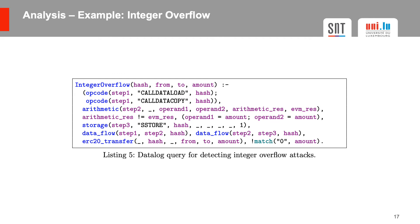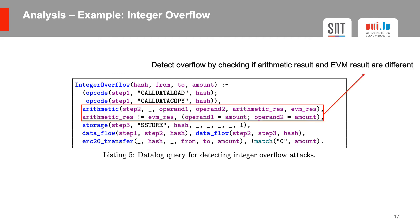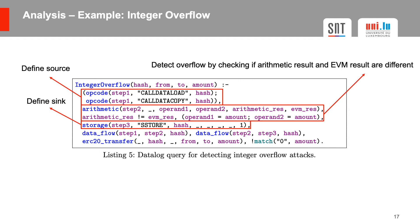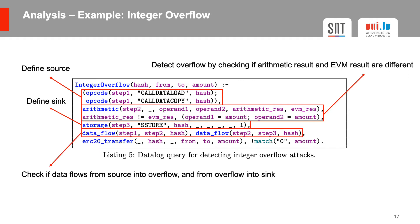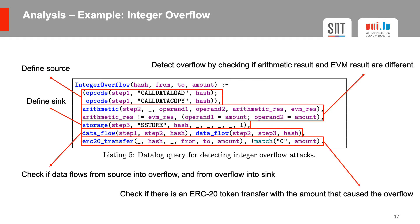In this example you can see a datalog query to detect integer overflows. First we detect if an overflow occurred by checking if the arithmetic result is not the same as the result computed by the EVM. Afterwards we define callDataLoad and callDataCopy as our sources and a write to storage as our sink. Then we check if data flows from either callDataLoad or callDataCopy into an arithmetic operation that resulted in an overflow, and if the result of the operation flows into storage. Finally we check if there is an ERC20 token transfer with the amount that caused the overflow.